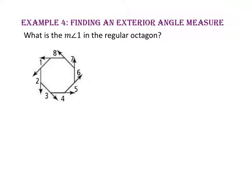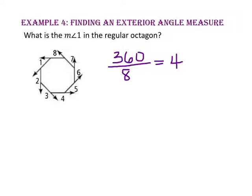In example four, we will find an exterior angle measure. What is the measure of angle one in the regular octagon? Remember, a regular octagon has all angles that are congruent. Since there are eight angles and the sum of the exterior angles is always 360, we divide 360 by 8. So the measure of angle one, and all the other exterior angle measures, is 45 degrees.